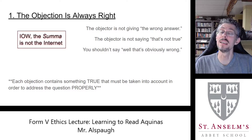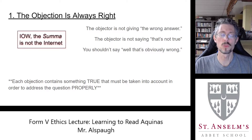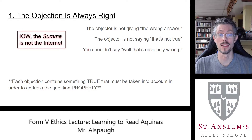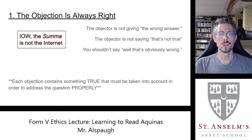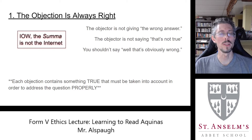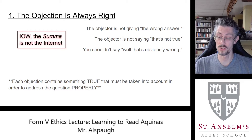Rule number one: the objection is always right. This rule is trying to make clear what's going on in the objections and why we should not skip them — it's very common for students to skip the objections and go right to the respondeo, and that's a mistake. The objectors are not just wrong. If they were simply false statements there would be no reason to include them in the book.